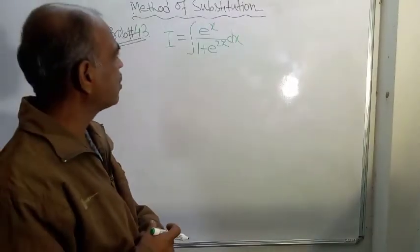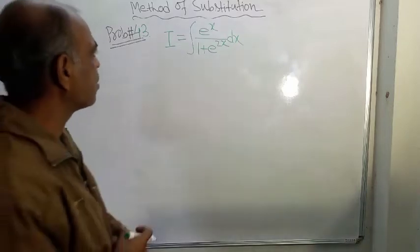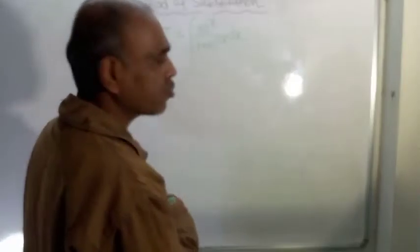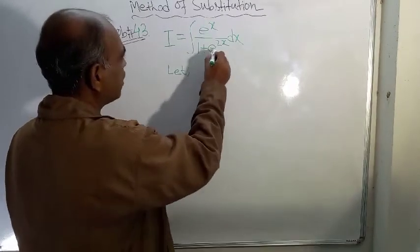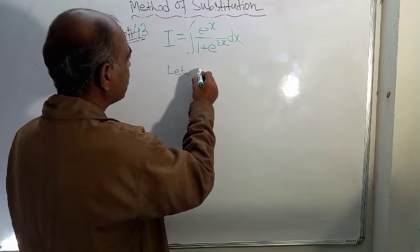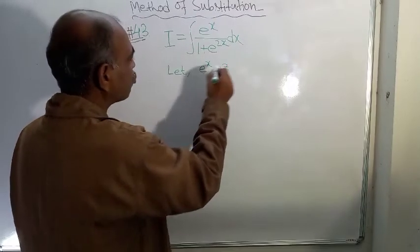This is the problem: e to the power x divided by 1 plus e to the power 2x, and then dx. So to solve this problem, let e to the power x equal z. You write it this way.